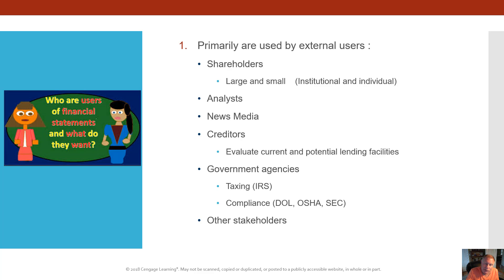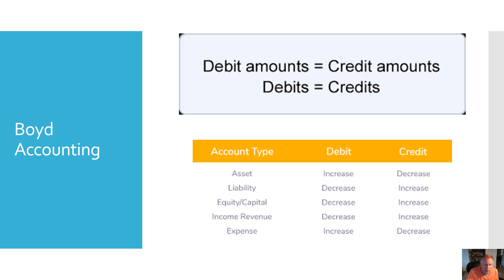We're going to keep this theme going as we move into managerial accounting. Accounting comes down to a couple of basic things — I'll call them the broad accounting rules. Follow these and you will eliminate most of the mistakes you make in accounting. First: debits equal credits. This is the double-entry bookkeeping system, which has been in use for hundreds of years. You need to look at both sides.